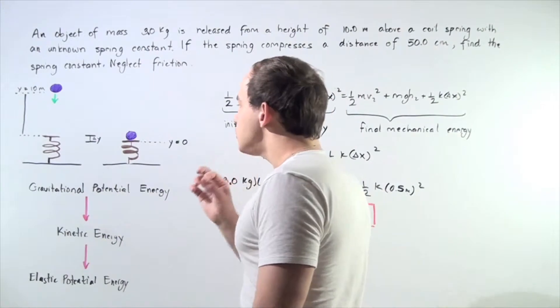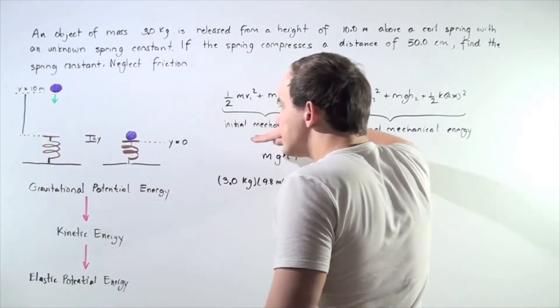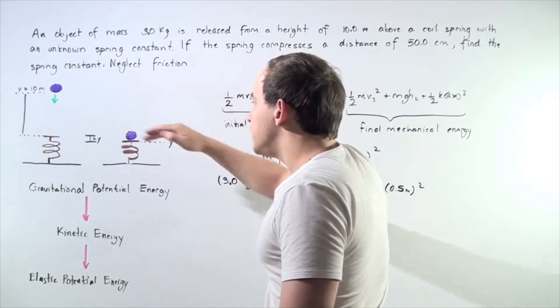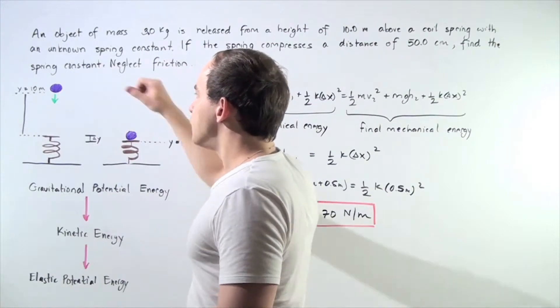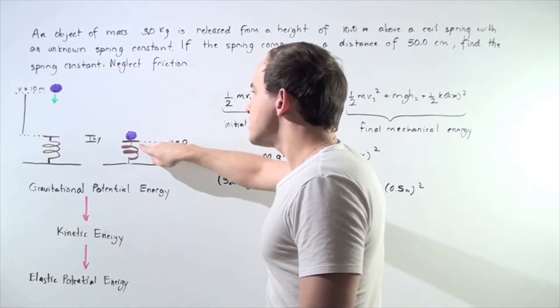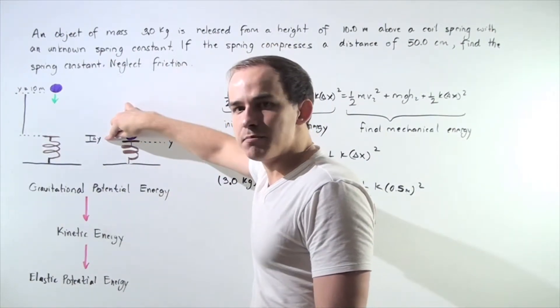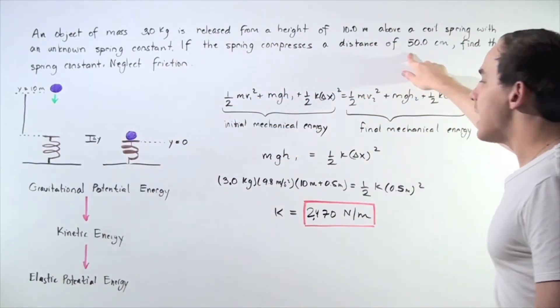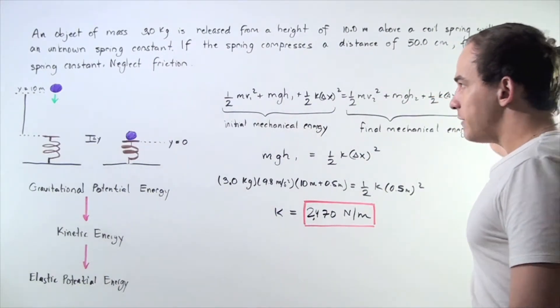Let's choose our y-axis to run along the axis with the spring. So the total distance from where our object begins to travel to this position is 10 meters plus this displacement, which is 0.5 meters. So, 50 centimeters divided by 100, 0.5 meters.